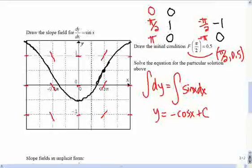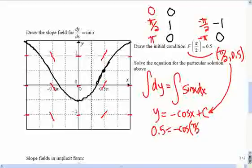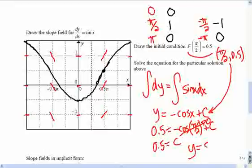So to solve for that particular solution, we use that point, and 0.5 equals the negative cos of pi over 2 plus c. And cosine of pi over 2 is worth 0, good. So I get 0.5 equals c. The particular solution that we actually have already drawn is y equals negative cos x plus 0.5. And that's the graph you should recognize there.